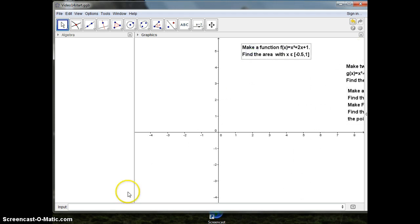My first task is with this function, f of x equal to x squared plus 2x plus 1. I want to find the area between where x is between minus 0.5 up to 1.